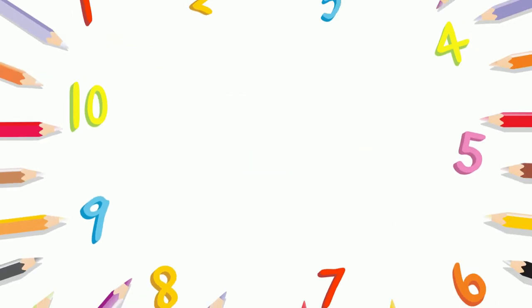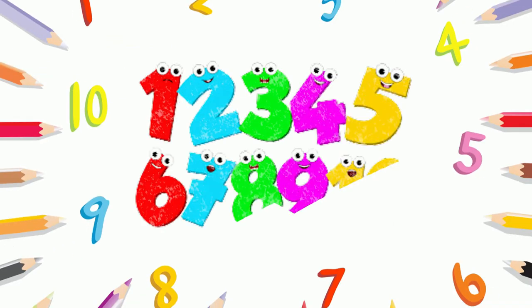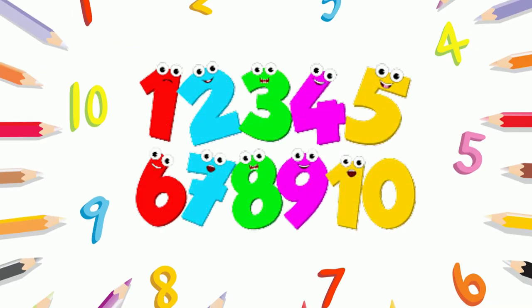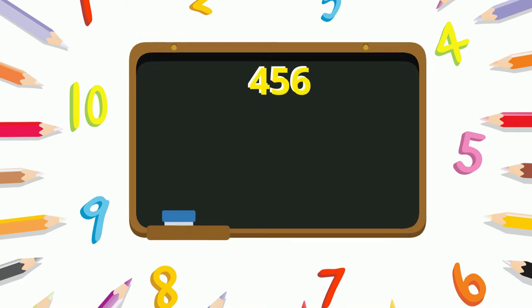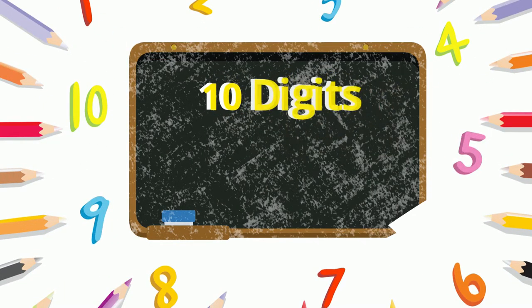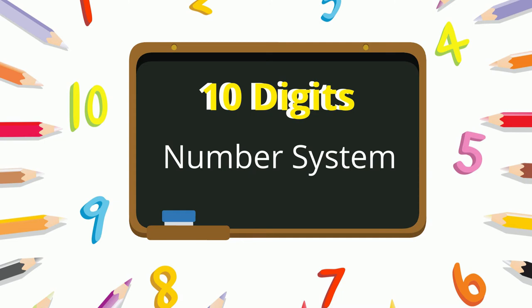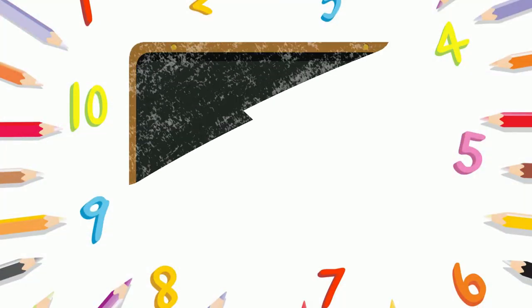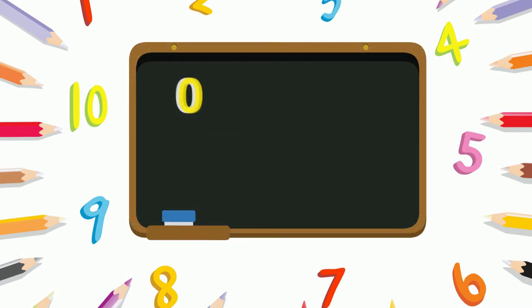Place value is an important part of the number system. Place value helps us to represent all our numbers with just the digits. There are ten digits in the number system which we use to represent our numbers.